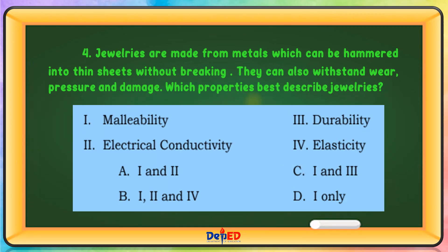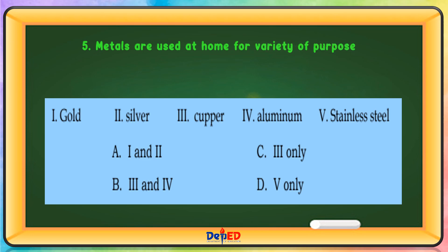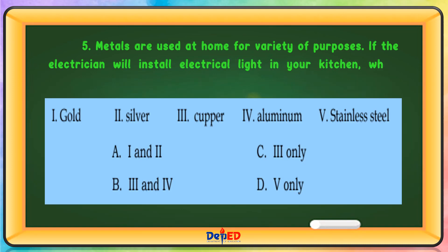Metals are used at home for a variety of purposes. If the electrician will install electrical lights in your kitchen, which materials are practical to use? The correct answer is Letter C: Copper only.